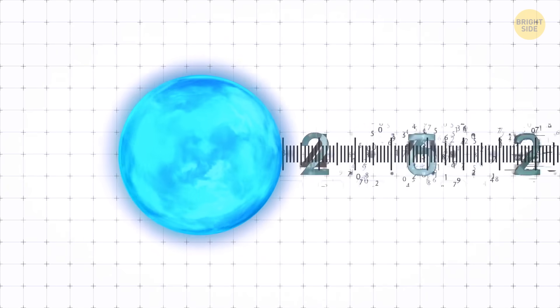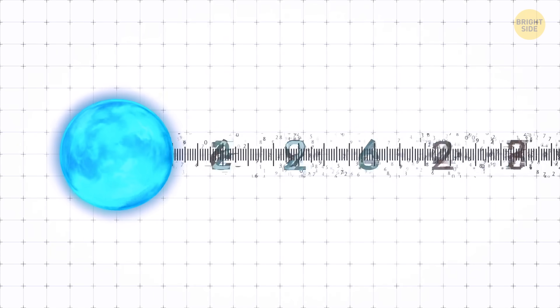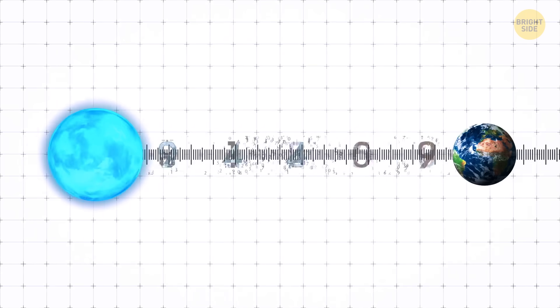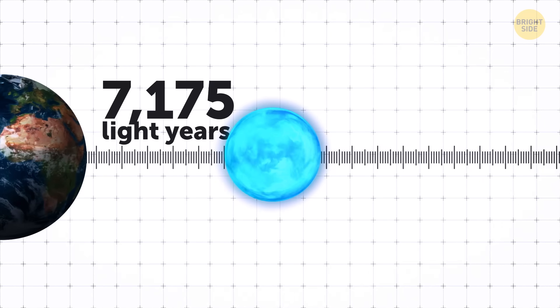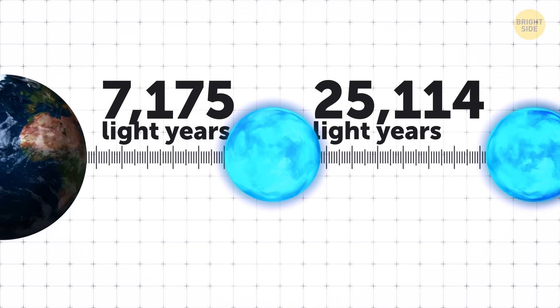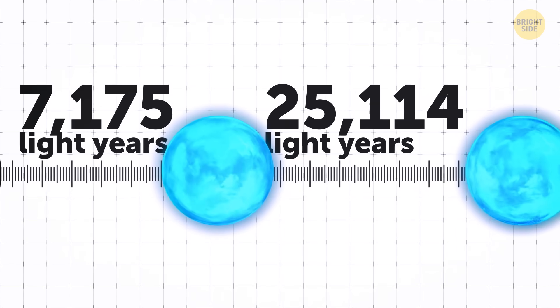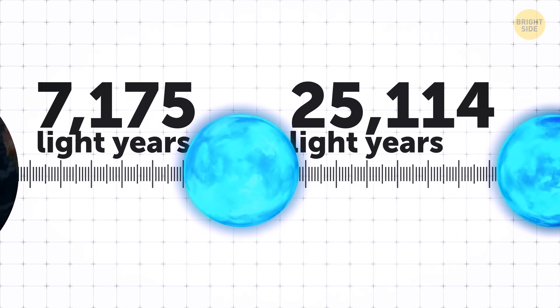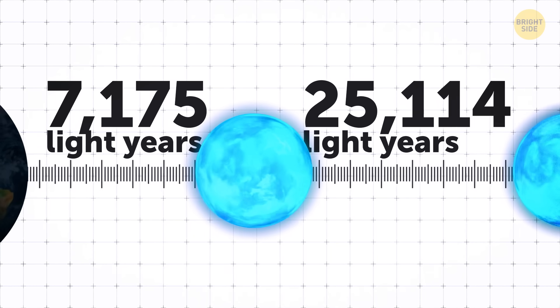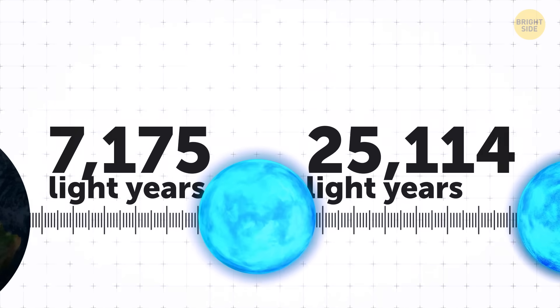But figuring out how far away is this thing? Strangely, it's not so easy. Scientists have run the numbers and ended up with two possible distances for Teleos. Either it's around 7,175 light-years away, or it's much farther, about 25,114 light-years away. Give or take.